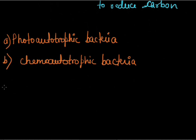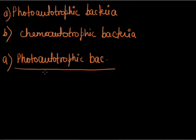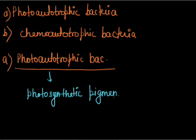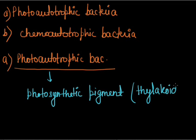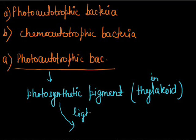The first one is photo-autotrophic bacteria. These bacteria possess photosynthetic pigments in membrane-bound lamellae called thylakoids, and they utilize light energy to perform photosynthesis. So what they utilize is light energy, and the process is called photosynthesis.